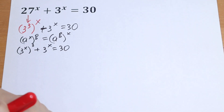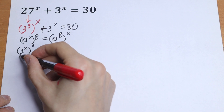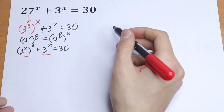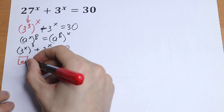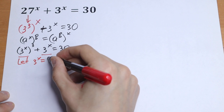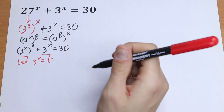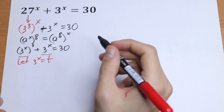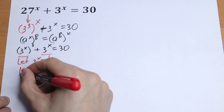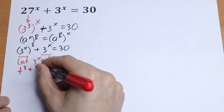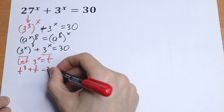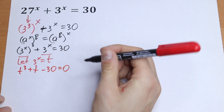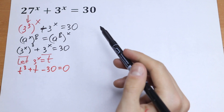Right now we can see that these 3 to the power x terms suggest a substitution. So let 3 to the power x equal t. Now we will have an interesting cubic equation: t cubed plus t minus 30 equals zero.